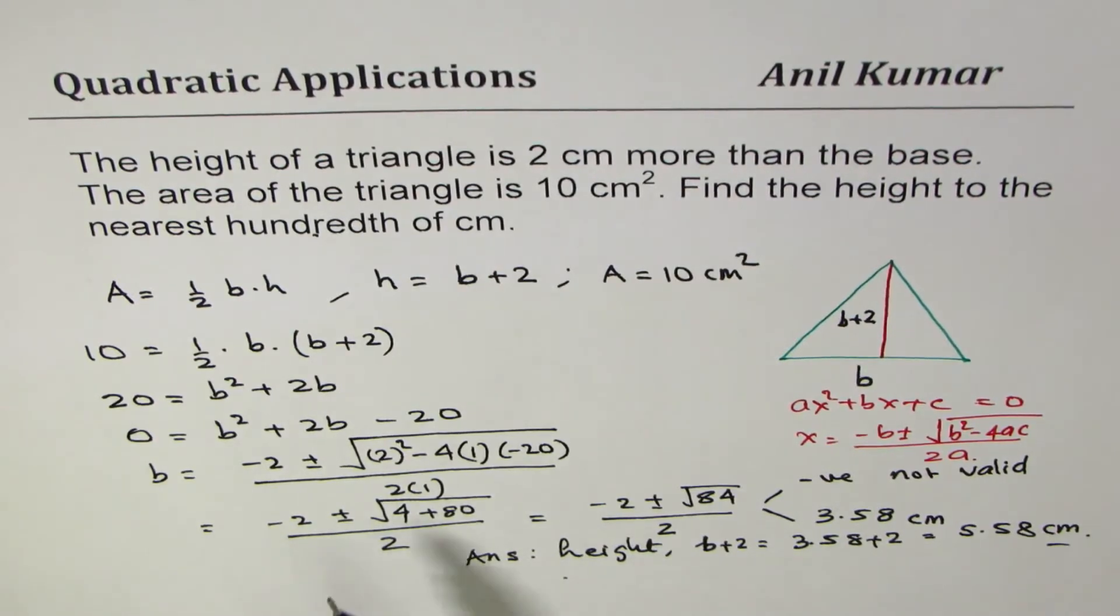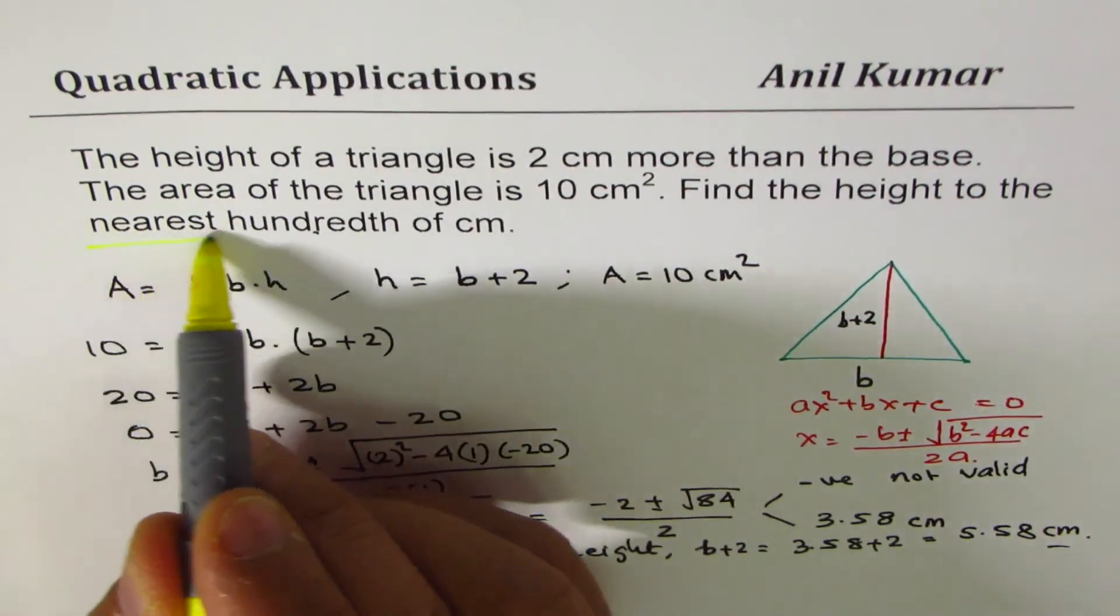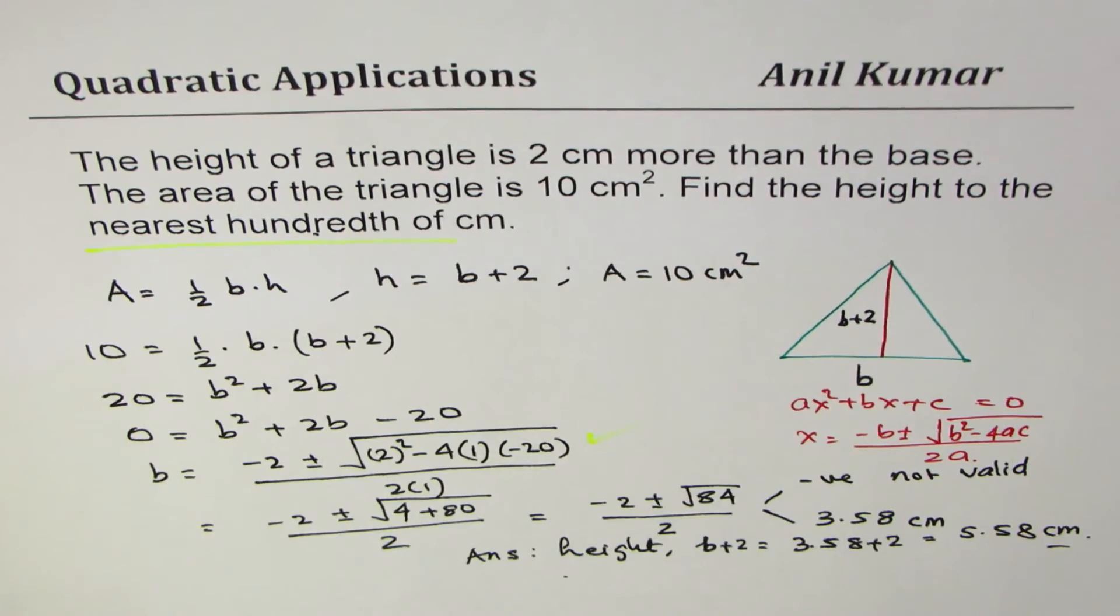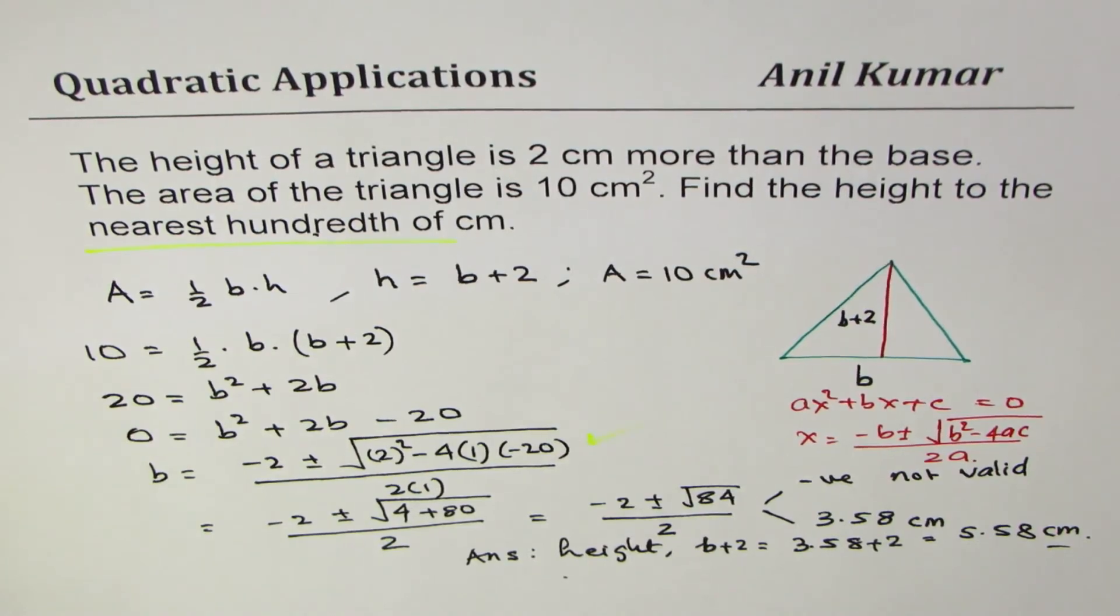So whenever you use quadratic formula you can expect a decimal value. If the question suggests 'nearest to' it means you have to use quadratic formula. So it's a direct kind of hint. I hope that helps. We'll take a few more examples to practice. Thank you.